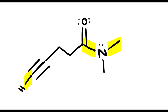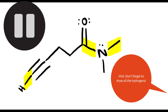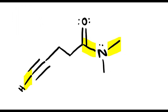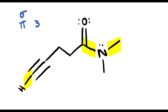Here's a practice question for you: try to figure out how many pi bonds and how many sigma bonds are in the following molecule. You can also try to figure out the orbital overlap for the highlighted bonds. Go ahead and pause the video, and then check your work. Okay, so we'll start by figuring out how many sigma and pi bonds are in the molecule, starting with pi bonds. A triple bond has two pi bonds, so we have two pi bonds from the triple bond. And there's another pi bond from the double bond, for a total of three pi bonds in the molecule.